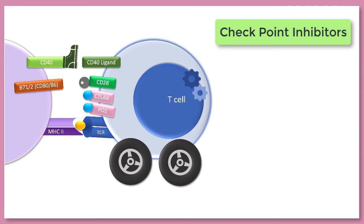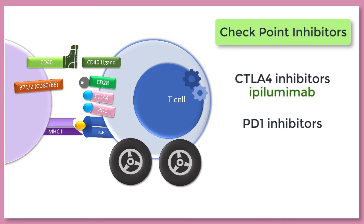And because we have two different brake pedals, we have two groups of checkpoint inhibitors, the CTLA4 inhibitors and the PD1 inhibitors. Perhaps the most famous CTLA4 inhibitor is ipilimumab, which is used to treat melanoma as well as some other cancers. An example of a PD1 inhibitor is nivolumab, which is used to treat both solid organ malignancies and lymphomas.